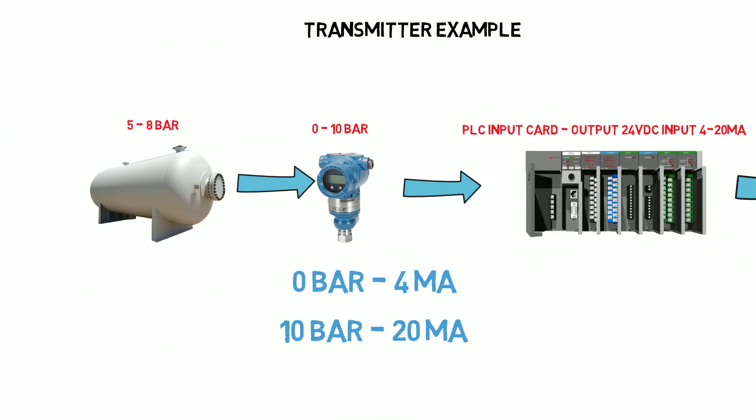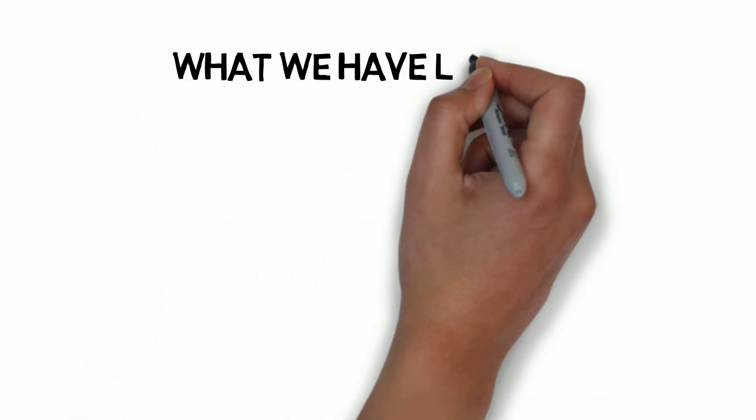Notice how the zero of the transmitter is 4 milliamps and not 0 milliamps. This gives the benefit of being able to detect if there is an issue with the transmitter. Let's say a broken cable. The input card will detect this as an out of range condition that will alert an operator there is a problem. This would not happen if zero bar was represented by zero milliamps.